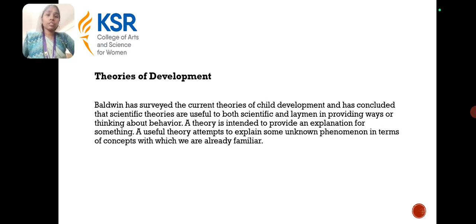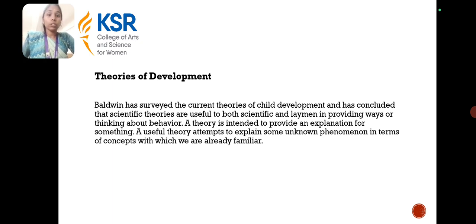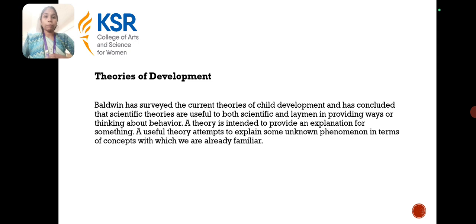Next are the theories of development. Balvin has surveyed current theories of child development and concluded that scientific theories are useful for both scientists and laymen in providing ways of thinking about behavior. This is a useful theory which attempts to explain some unknown phenomena in terms of concepts with which we are already familiar.